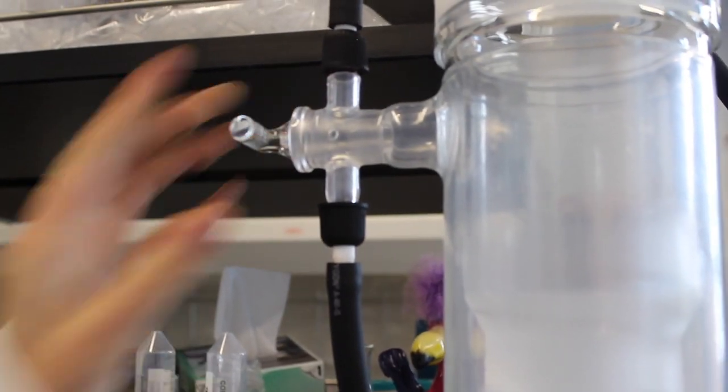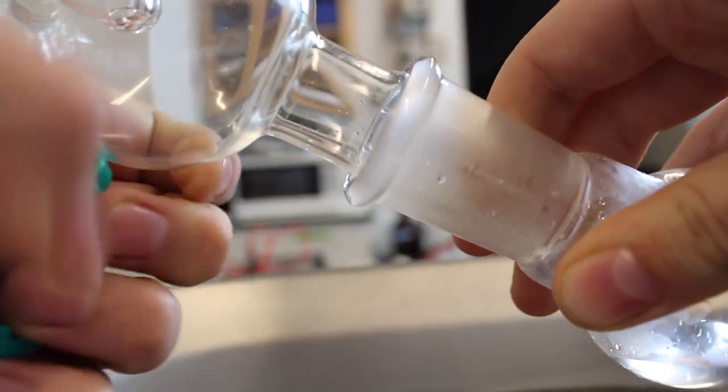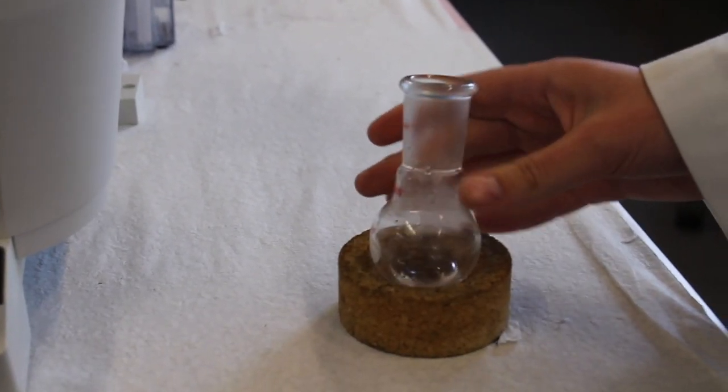The round bottom may be difficult to pull off the bump trap. Adding grease to the connections before adding the round bottom flask to the bump trap may help with this. For safety, set the round bottom flask down in a cork donut.